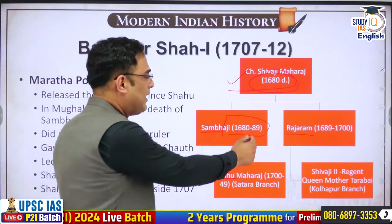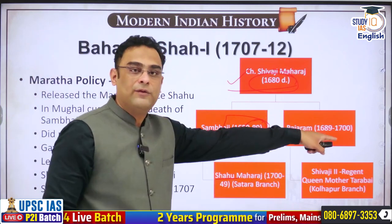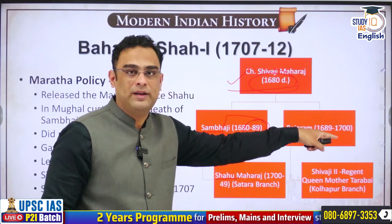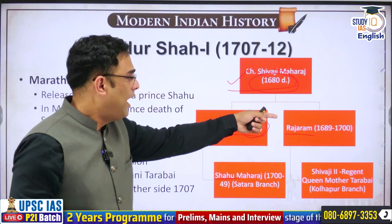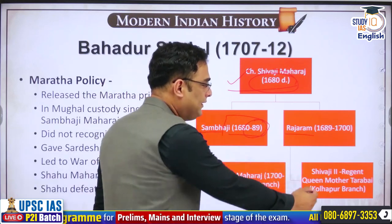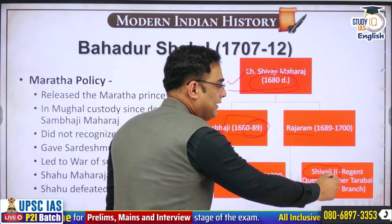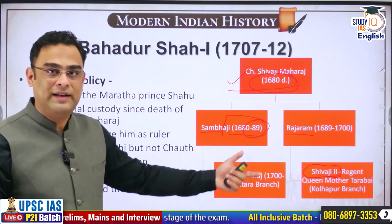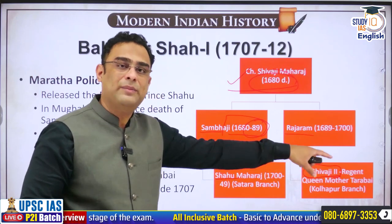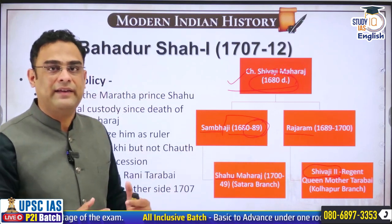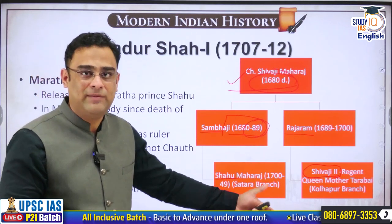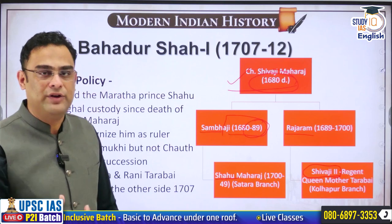From 1689, after the death of Sambhaji Maharaj, it was Raja Ram Maharaj who became the Chhatrapati, ruling until 1700. After the death of Raja Ram Maharaj in 1700, his infant son Shivaji II was declared head of the Maratha state. While he was very young, the queen mother Tara Rani served as queen regent, controlling the entire administration and giving a tough fight to the Mughals.